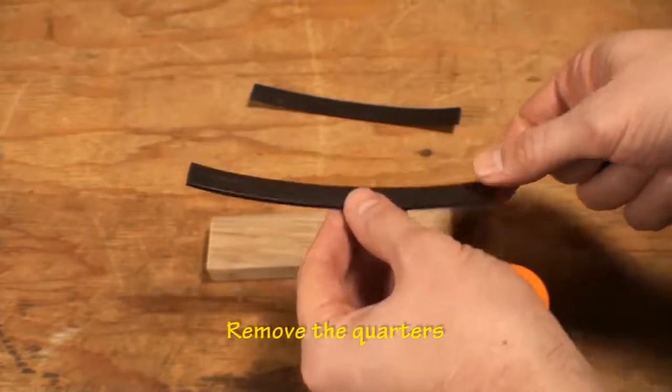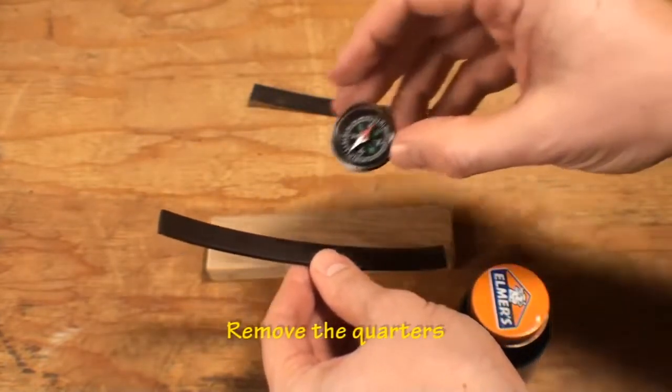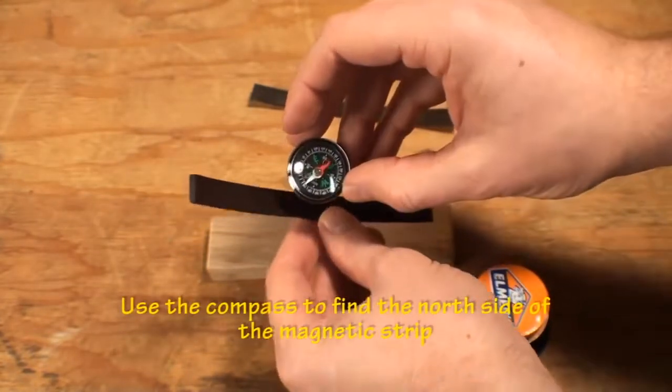Now it's time to create the train block. Remove the quarters and tape you attached to it earlier so the block is now bare.